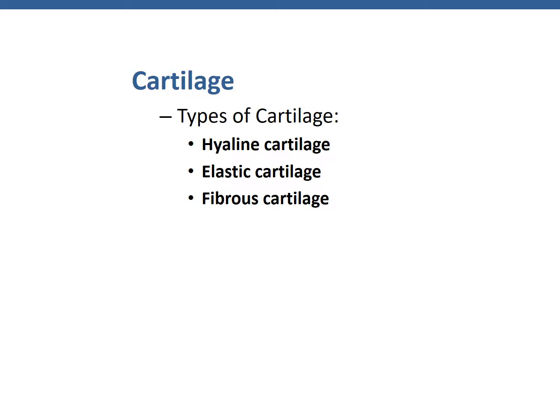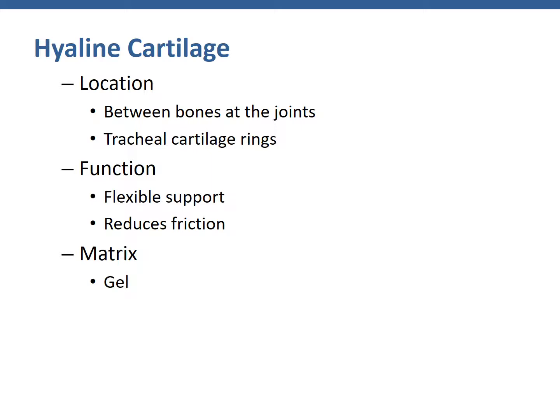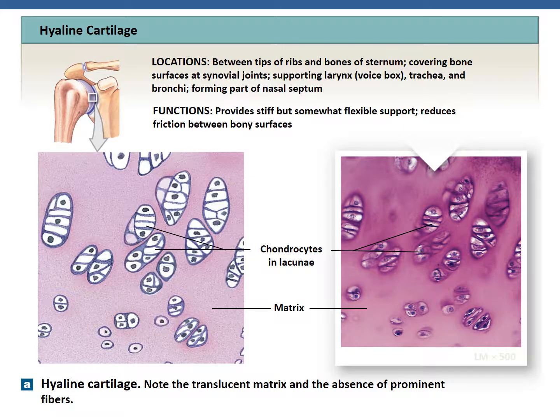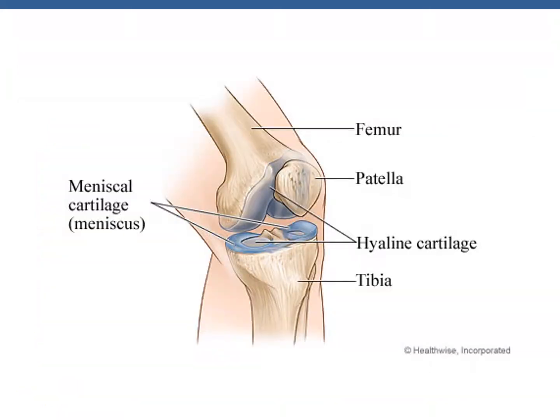There are three types of cartilage: hyaline, elastic, and fibrous. Hyaline cartilage is found between the bones of the joints and in the tracheal cartilage rings. Additionally, it makes up the blueprint for what our body will become when we are an infant — all of our bones are more hyaline cartilage-based when we're infants, then gradually calcify and get stronger. The function of hyaline cartilage is to provide flexible support and reduce friction. Its matrix is gel-like, with a translucent appearance, and the chondrocytes exist in the lacunae with an absence of prominent fibers. Hyaline cartilage makes up the articular surfaces of bones, reducing friction where bones touch or articulate with one another.